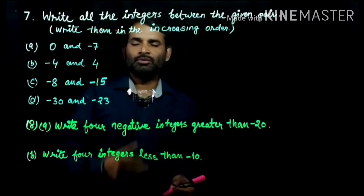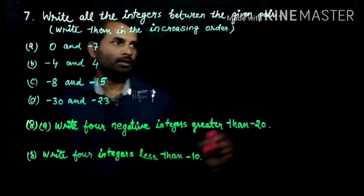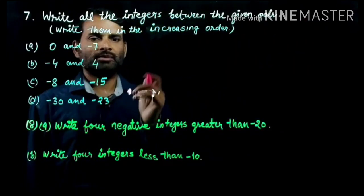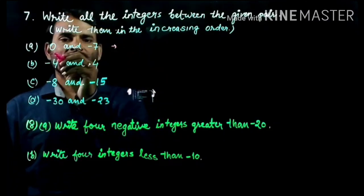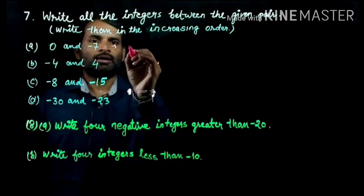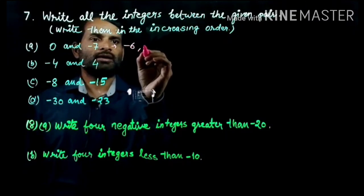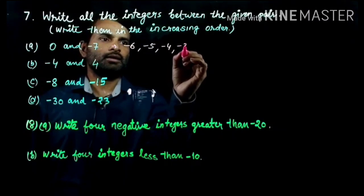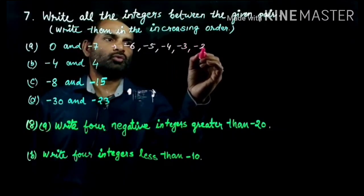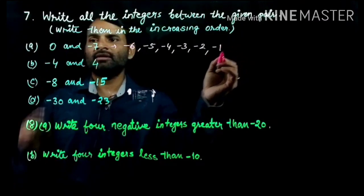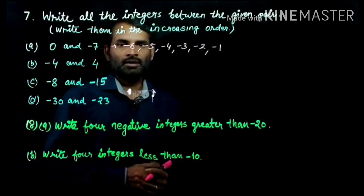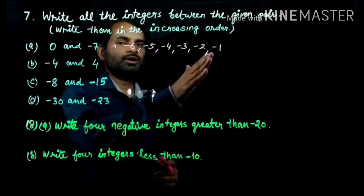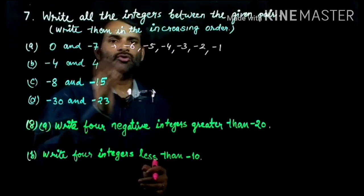So the first pair is 0 to minus 7. Increasing order means first will be small. The small number is minus 7 and 0 is the big number. So we write: minus 7, minus 6, minus 5, minus 4, minus 3, minus 2, minus 1, and then 0. So minus 6, minus 5, minus 4, minus 3, minus 2, and minus 1 are between 0 and minus 7.